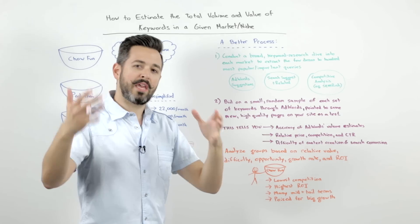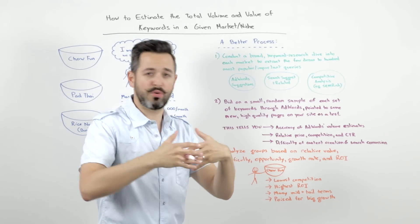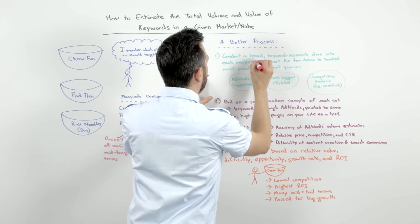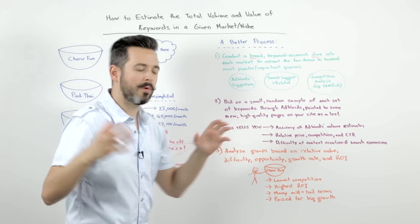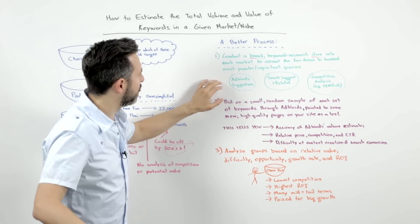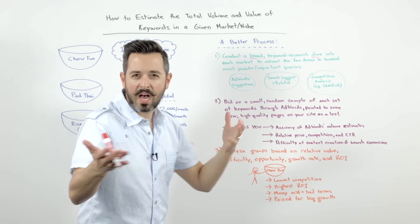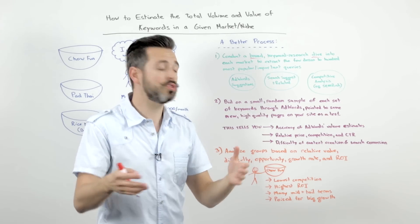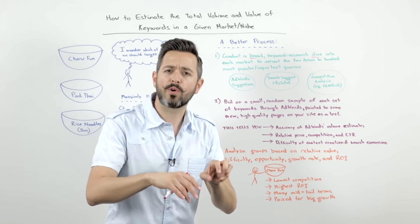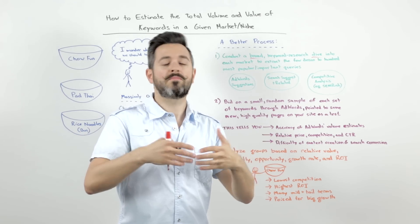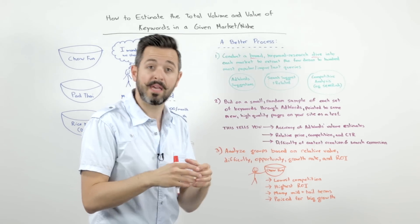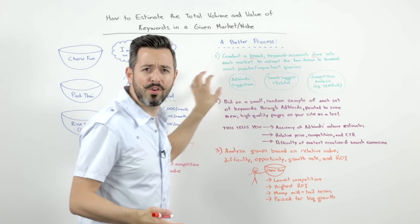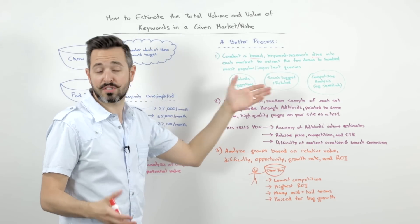All right, first off, we're going to conduct a broad keyword research dive into each one of these. Not as much as we would do if we knew chow fun is the one we're going to target, but we're going to do what I'd call a broad dive, not a deep dive, into each market. So I'm going to look at the AdWords suggestions and tally those up. I'm going to look at search suggest and related searches for some of the queries that I get from AdWords, some of the top ones anyway. And I'm going to do a brief competitive analysis. Maybe I'll put the domains that I'm seeing most frequently around these specific topics into SEMrush or another tool like that, so SpyFu, KeyCompete, whatever your preference might be, and see what other terms and phrases they might be ranking on. So now I've got a reasonable set, probably didn't take me more than a few hours to put that together, if that.